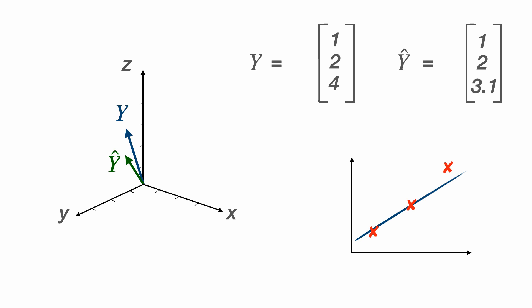So for example, we could make the line of best fit steeper, and that will stretch Y hat, or we could make it less steep, which will shrink Y hat. We could also translate the line of best fit up and down, and this will translate Y hat in the direction of the vector 1, 1, 1, because what we're doing is adding a constant to Y hat.